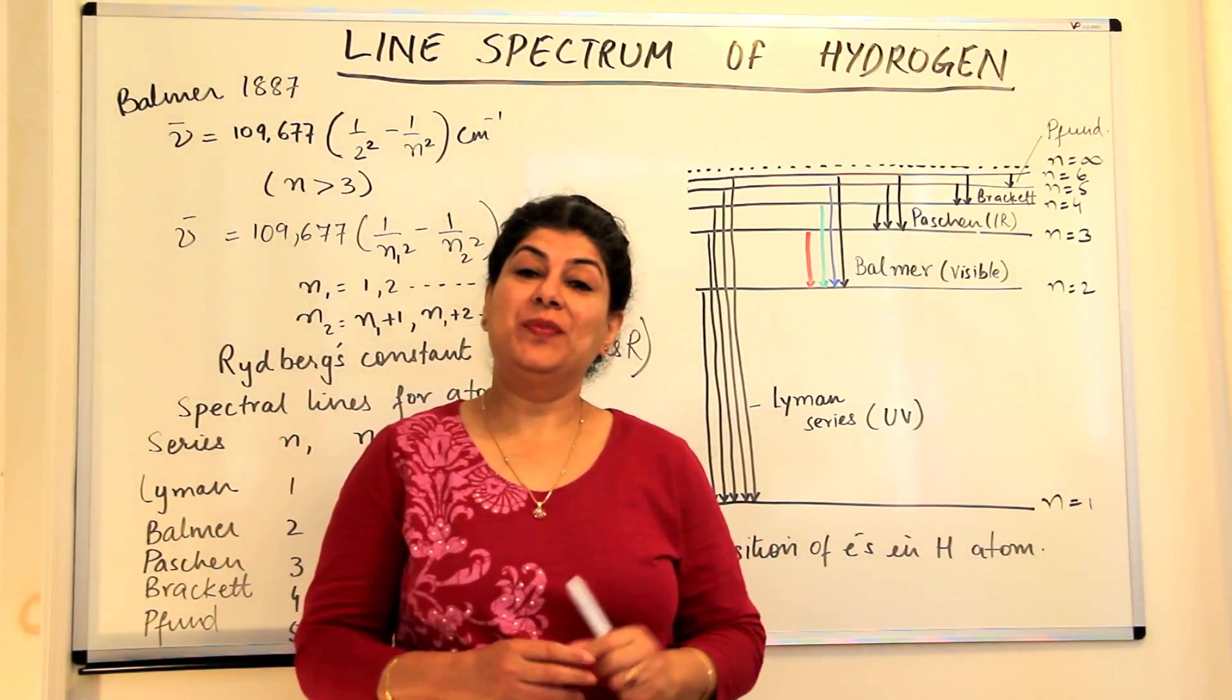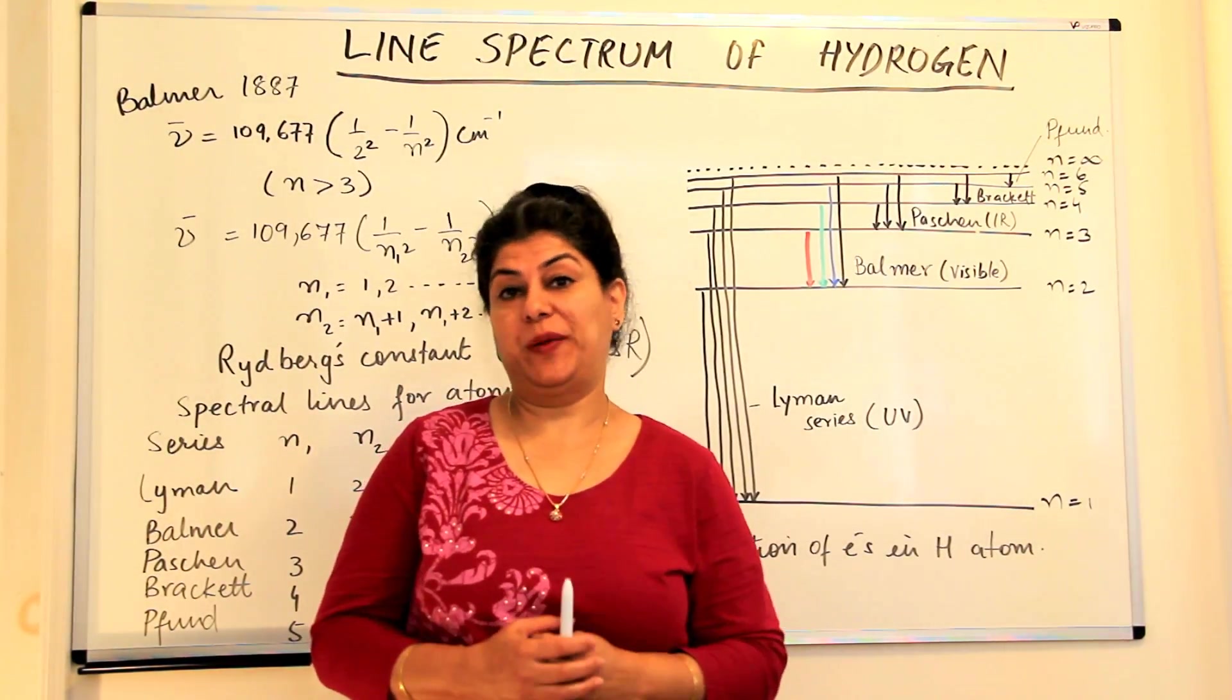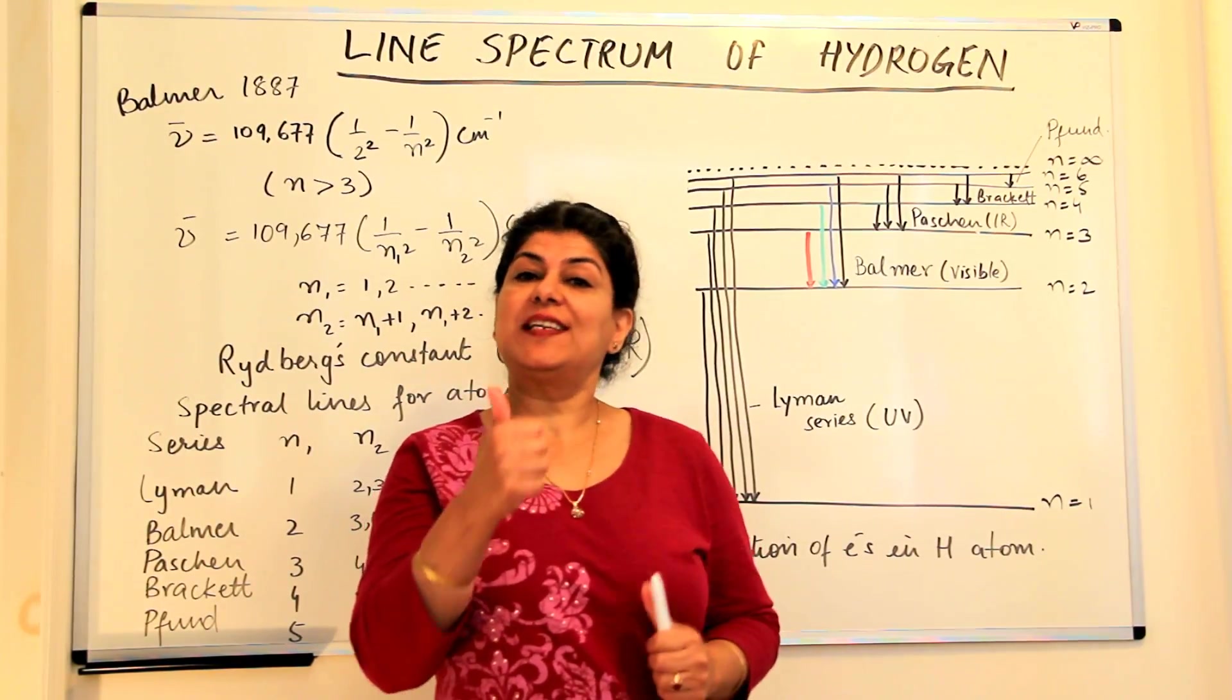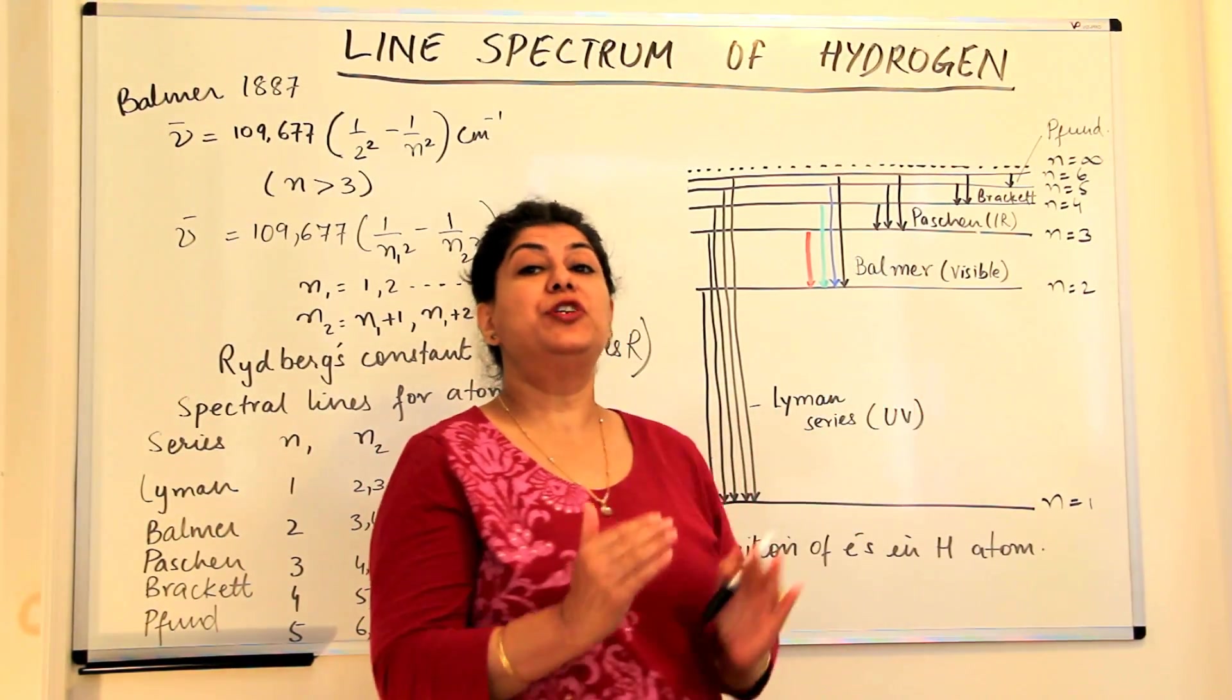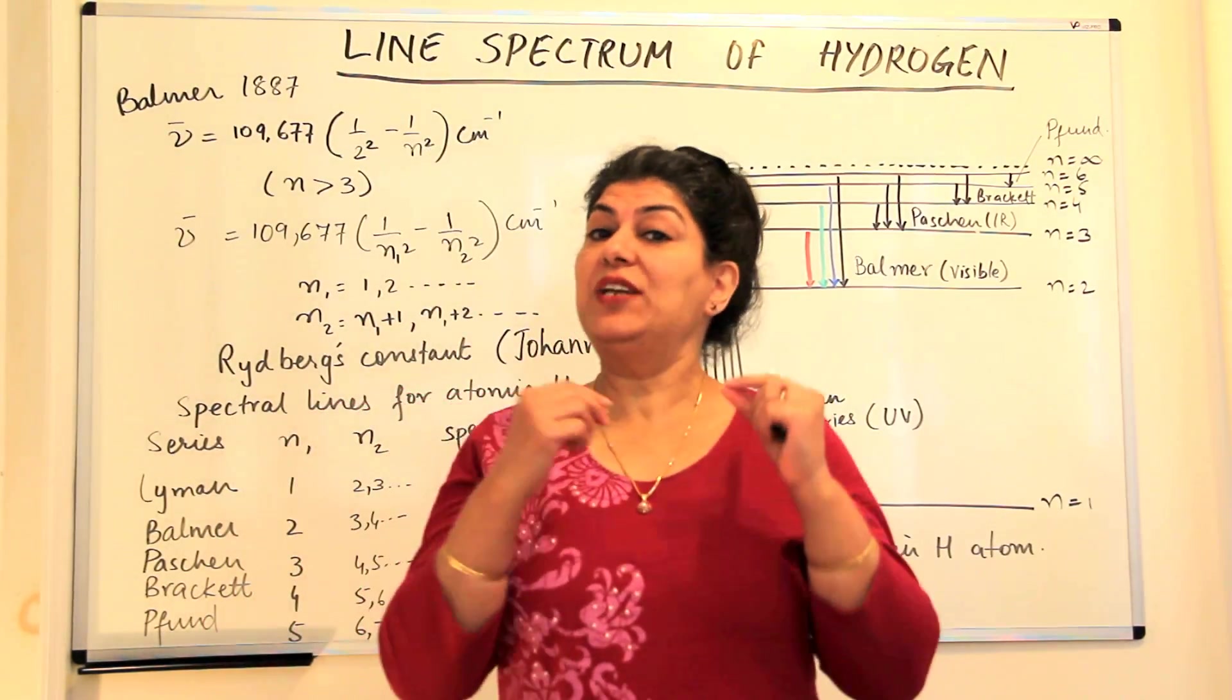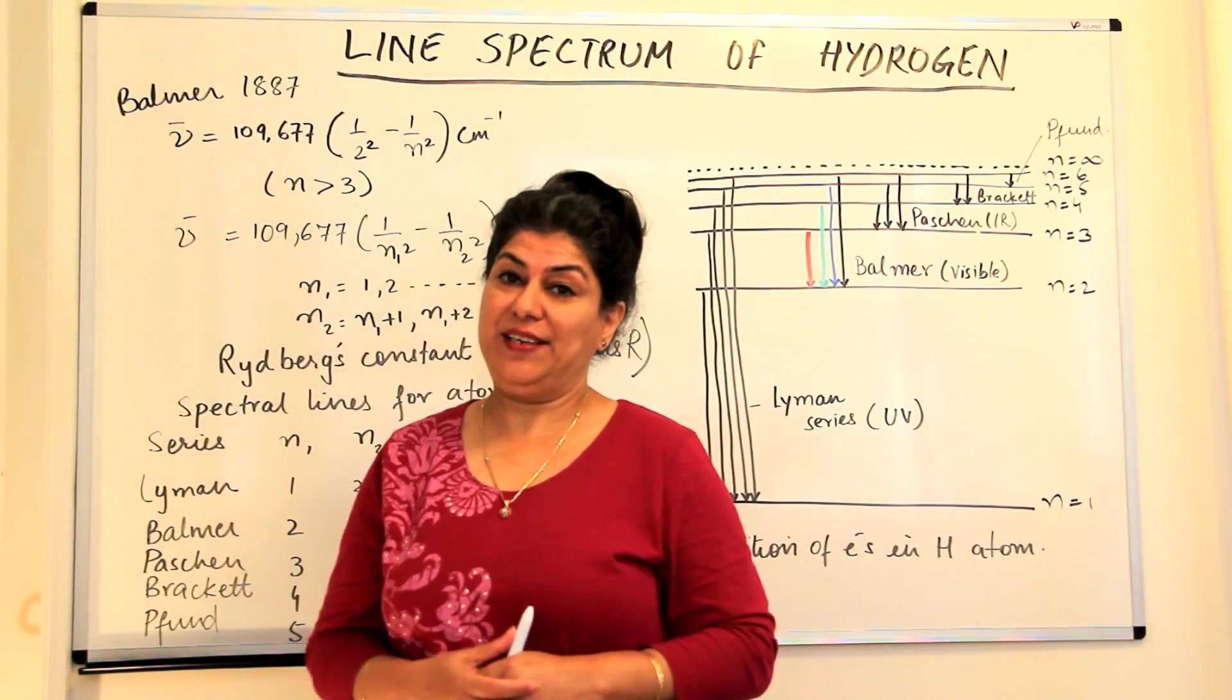In the previous video we studied about atomic spectra, the absorption and emission spectra, and how the identity of an element, just like the thumbprint of a human being, is the characteristic spectra produced by every element. So now going ahead with this thought in mind, the scientists were working and they wanted to come to another model of an atom.